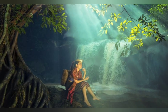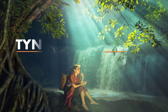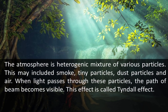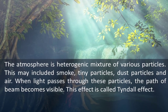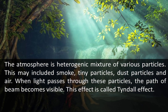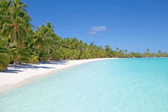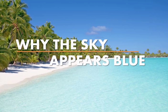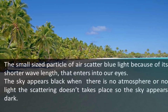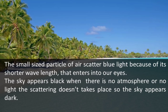The next effect of atmospheric refraction is the Tyndall effect. The atmosphere is a heterogeneous mixture of various particles, which may include smoke, tiny dust particles, and air. When light passes through these particles, the path of the beam becomes visible — this effect is called the Tyndall effect. The small-size particles of air scatter blue light because of its shorter wavelength, which is why the sky appears blue. When there is no atmosphere, scattering does not take place, so the sky appears dark.